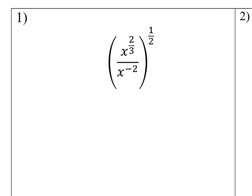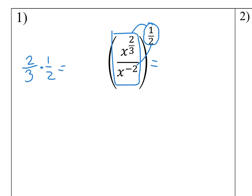So something like this problem — when you're doing a power to a power, you multiply the exponents. So we distribute them through. When we distribute, remember multiplying fractions is no problem: multiply tops, multiply bottoms. So when I multiply 1 half times 2 thirds I get x to the 1 third power.